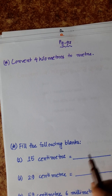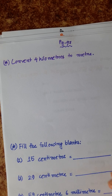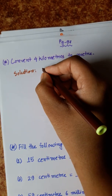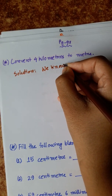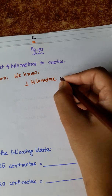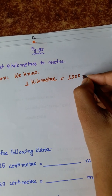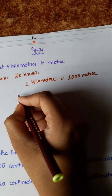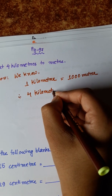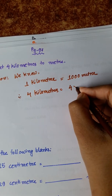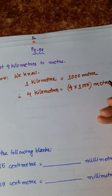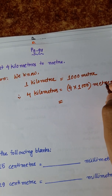Our next one is: convert 4 kilometers into meters. We know 1 kilometer is equal to 1000 meters. So, 4 kilometers is equal to 4 into 1000 meters.